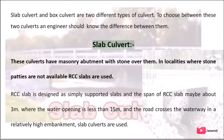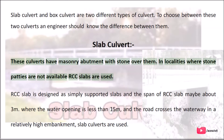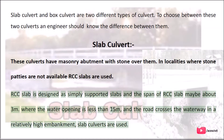Slab culverts have masonry abutments with stone over them. In localities where stone is not available, RCC slabs are used. The RCC slab is designed as a simply supported slab and the span may be about 3 m. Where the water opening is less than 1.5 m and the road crosses the waterway on a relatively high embankment, slab culverts are used.